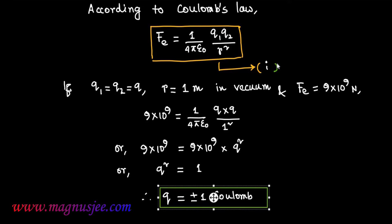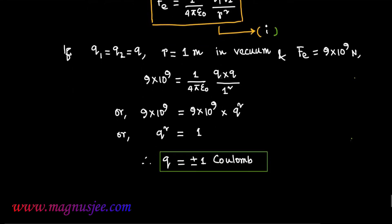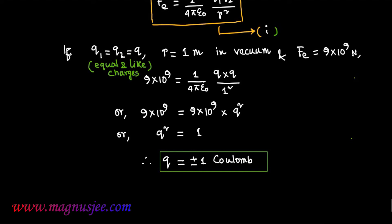Now we can state the definition of the SI unit of charge. In this case, Q1 = Q2, meaning the two charges are equal and like charges. So the SI unit of charge, that is 1 Coulomb, is defined as follows.